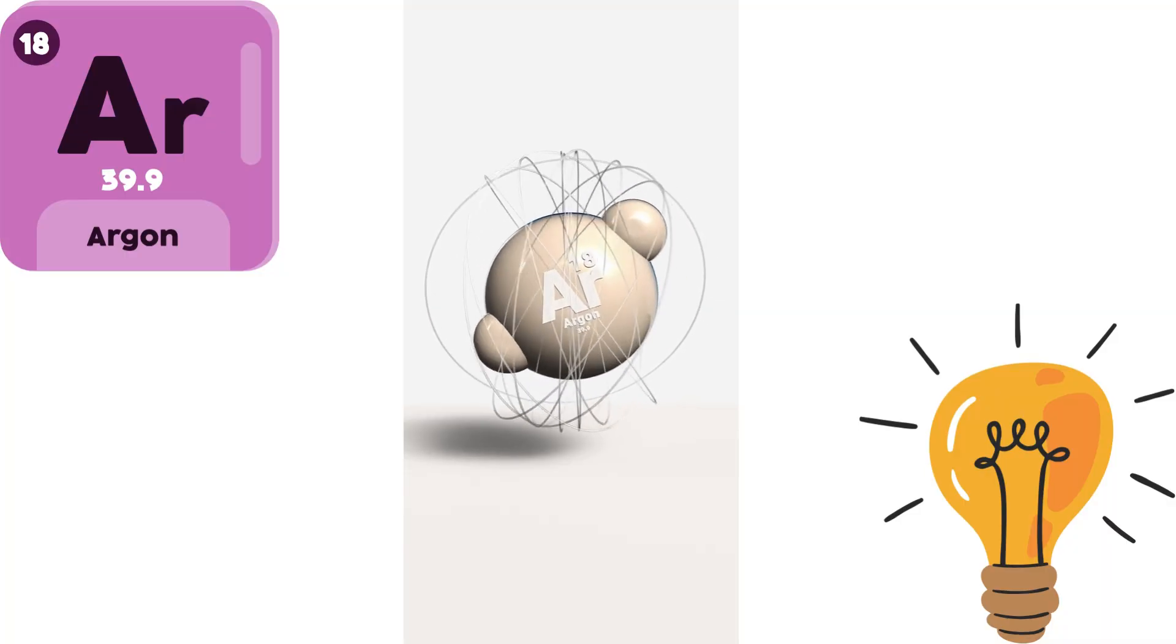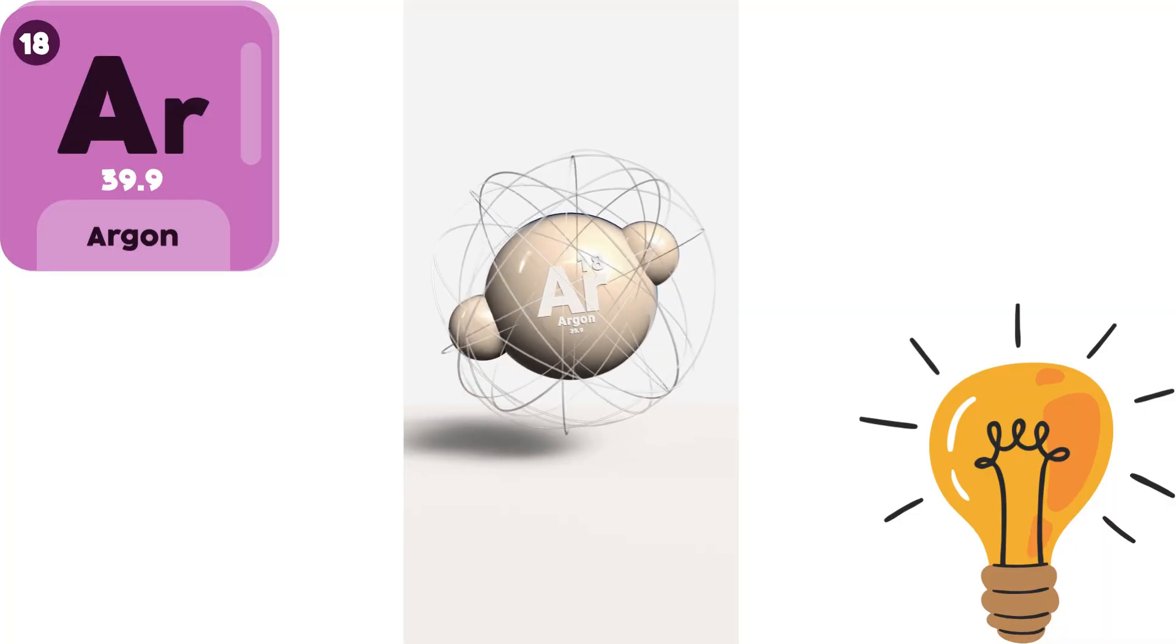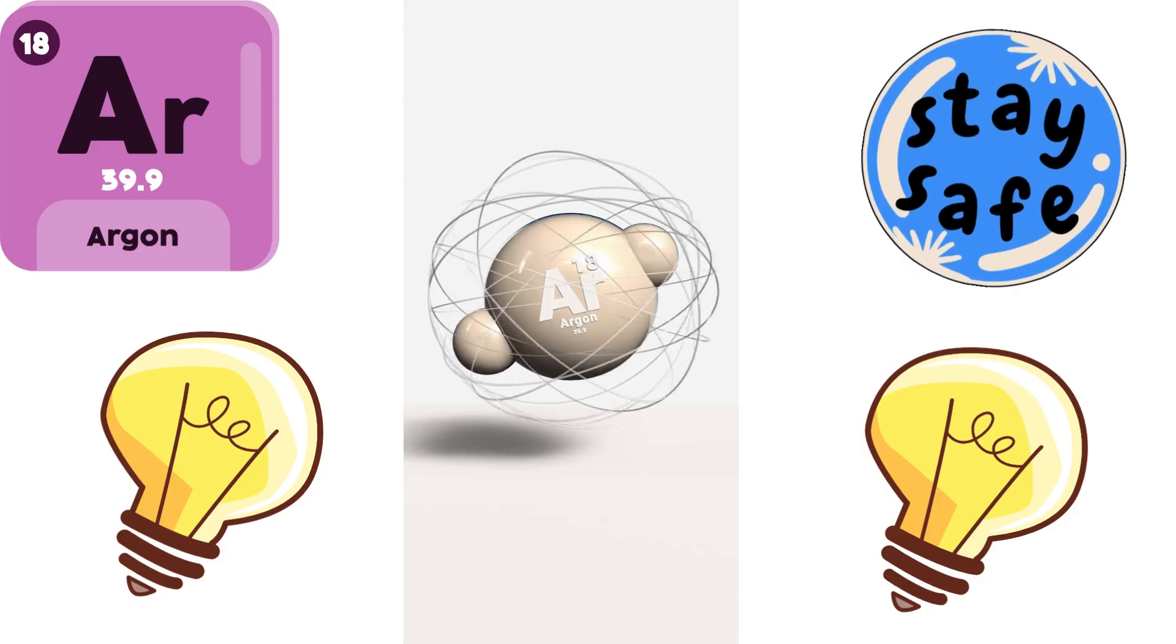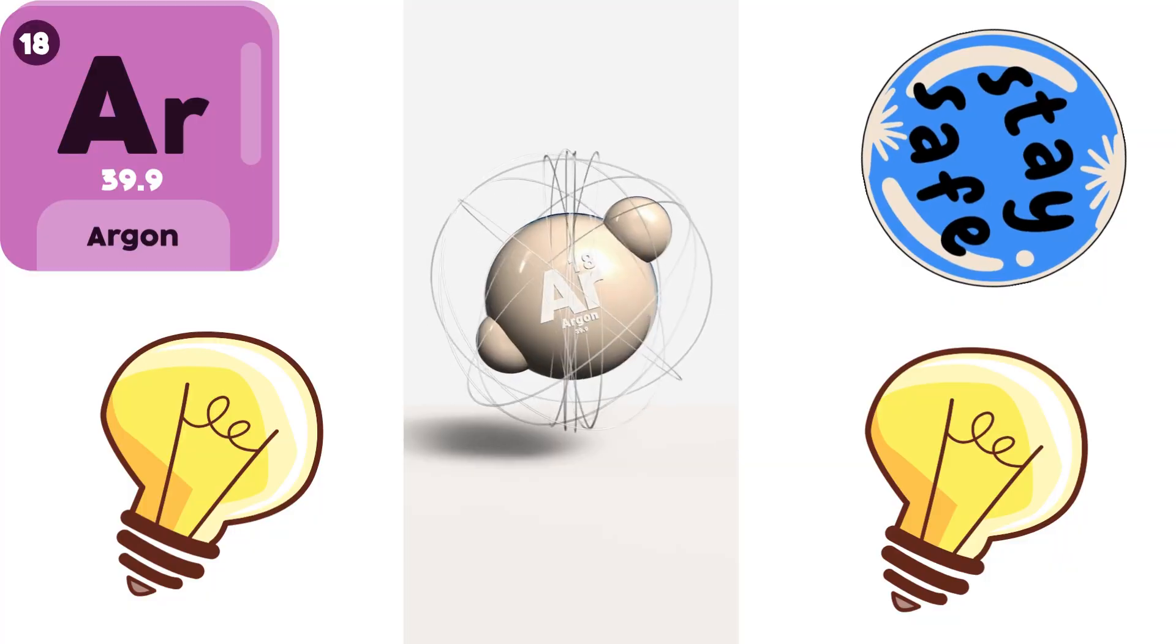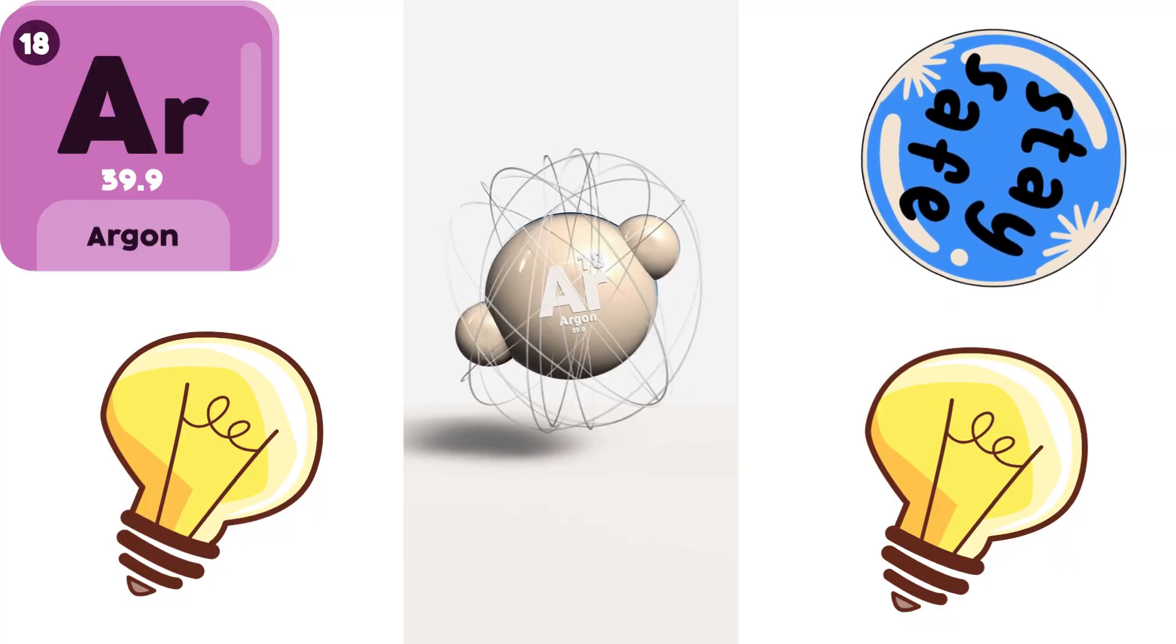Eighteen. Argon. Argon is a safe gas that doesn't react much with anything. It's often used in light bulbs to keep the wires inside from burning out.